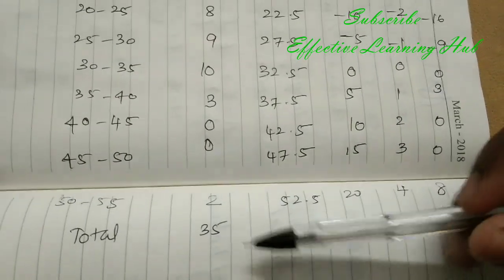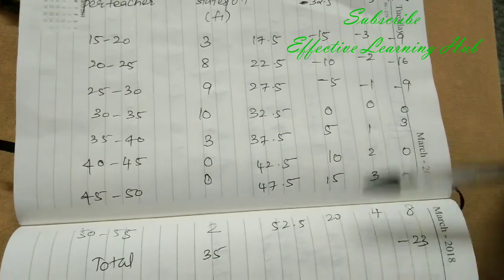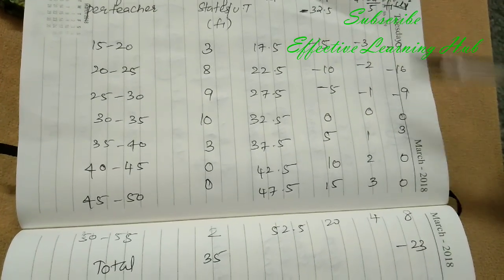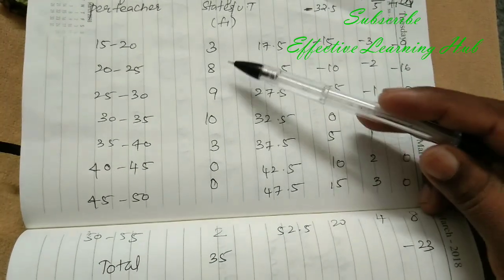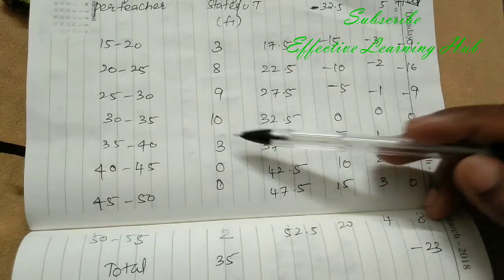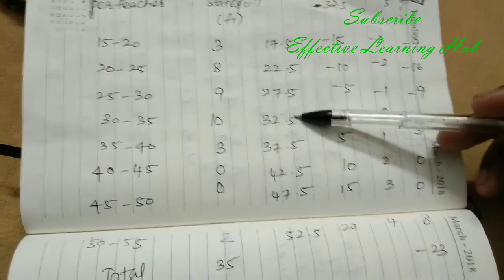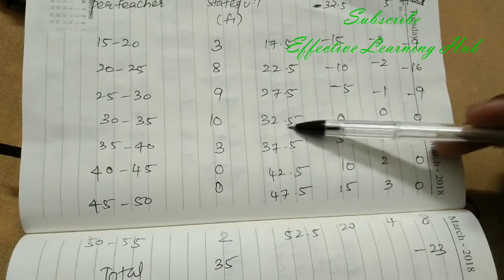Now find total summation FI. Sigma FI equal to 35. Sigma FI UI equal to minus 23. 1, 2, 3, 4, 5, 6, 7, 8 values there, so mid value 32.5 or 27.5, take anyone, no problem.